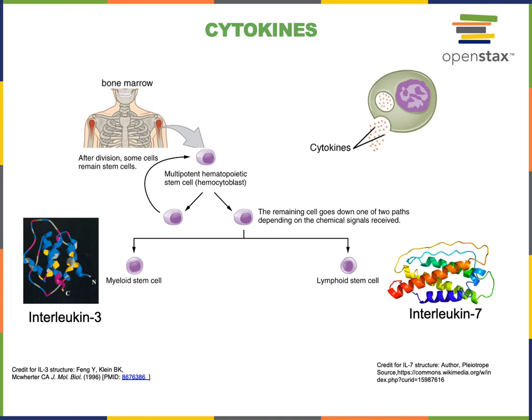Two specific examples of cytokines are interleukin-3 and interleukin-7, which are involved in regulating the differentiation of multipotent hematopoietic stem cells to form myeloid stem cells and lymphoid stem cells. Interleukin-3 stimulates the differentiation of hematopoietic stem cells into myeloid stem cells, whereas interleukin-7 stimulates the differentiation of hematopoietic stem cells to form lymphoid stem cells.